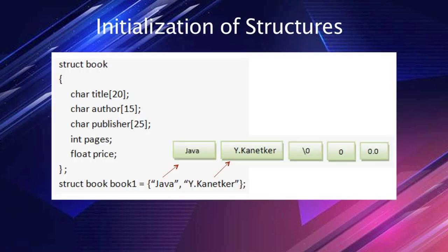In partial initialization, the first few members of the structure are initialized and those not initialized are assigned default values. For example, 'struct book book1 = {"Java", "Y Kanetkar"}' initializes the title as Java and the author as Y Kanetkar. The remaining three elements receive default values: null for character, 0 for integer, and 0.0 for floating point.